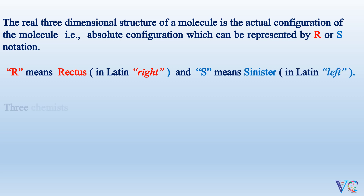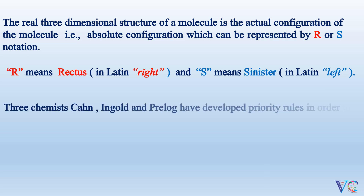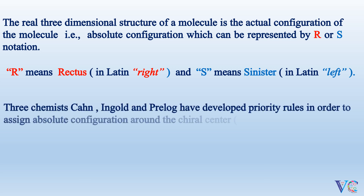Three chemists — Cahn, Ingold, and Prelog — have developed priority rules in order to assign absolute configuration around the chiral center.